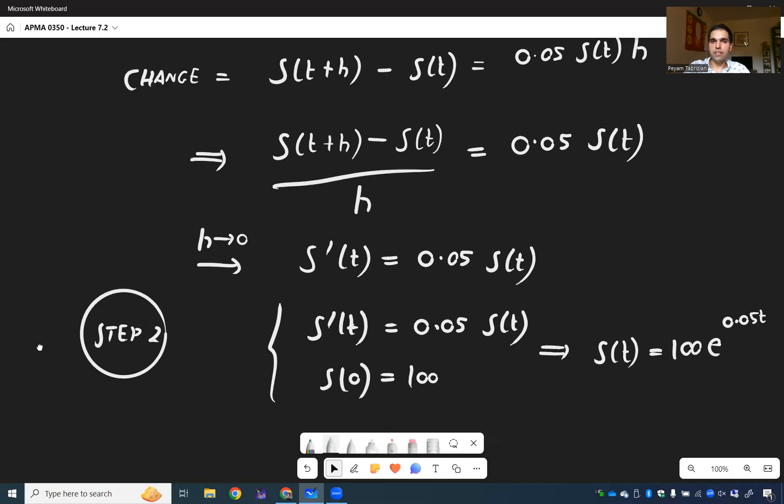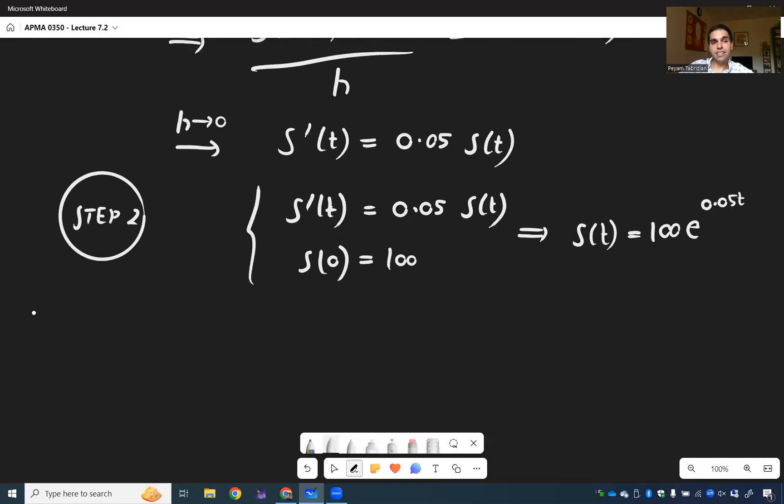And that is not what the question is asking. The question is asking, when will you get $250? And, well, all we need to do is solve this. 100 e^(0.05t) equals 250.